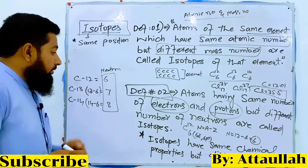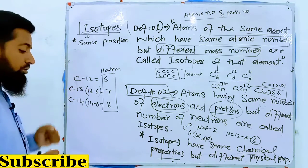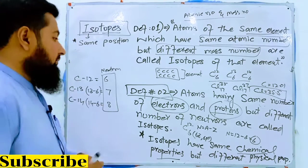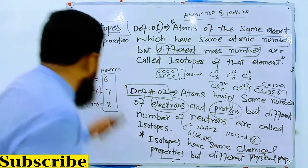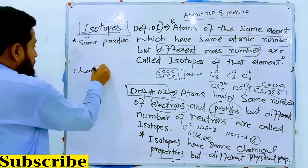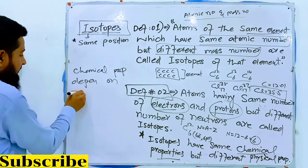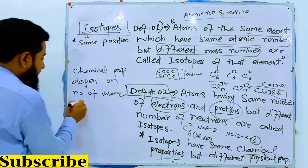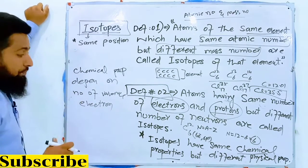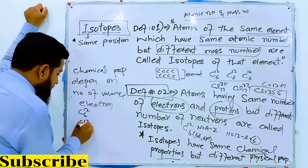Isotopes have the same chemical properties because chemical properties depend on the number of valence electrons. Since the valence electrons are the same, the chemical properties are the same. For example, carbon-12 (6 protons, 6 electrons), carbon-13 (6 protons, 6 electrons), and carbon-14 (6 protons, 6 electrons) all have the same electron configuration.